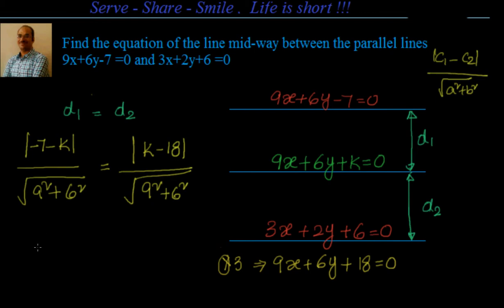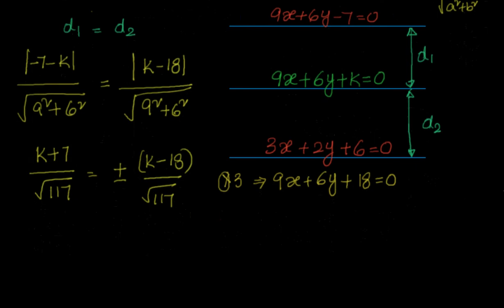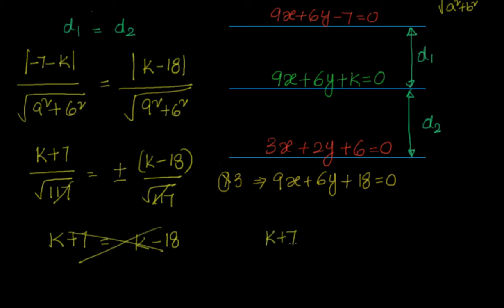Simplifying, we get mod of k plus 7 divided by root 117 equal to plus or minus k minus 18 divided by root 117. We have two options: one is k plus 7 equal to k minus 18, which is meaningless because k cancels and gives 25 equal to 0, which is not correct — so this is ruled out. The other option is k plus 7 equal to 18 minus k, which gives 2k equal to 11, so k equal to 11 by 2.